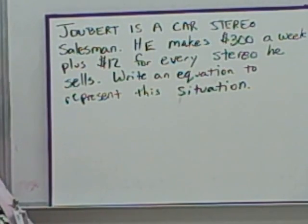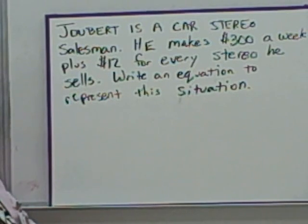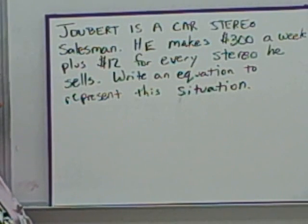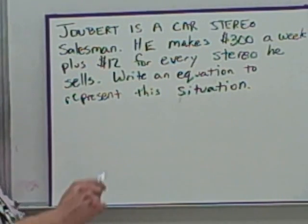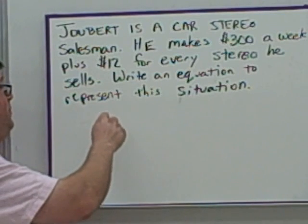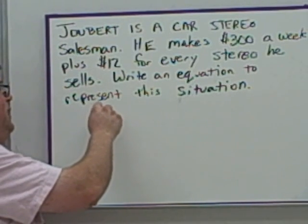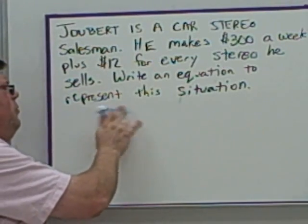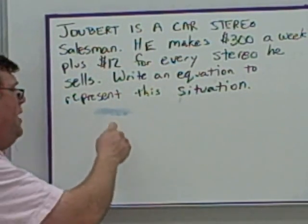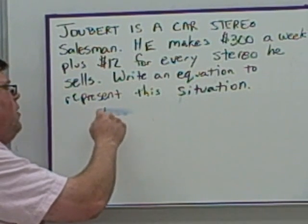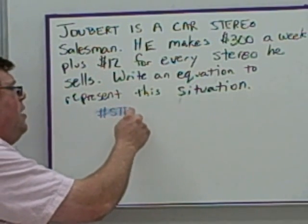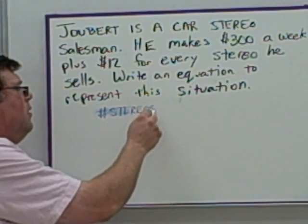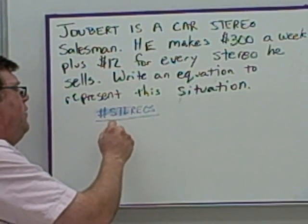Here we have another example. Joubert is a car salesman. He makes $300 a week plus $12 for every stereo he sells. Write an equation to represent this situation. Let's work with a table. The thing I can choose is the number of stereos he sells, so our table has: number of stereos and his total pay.